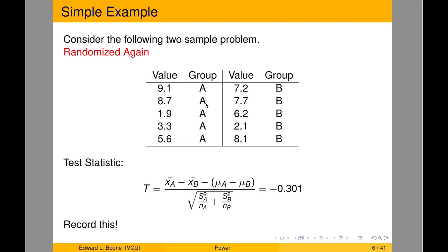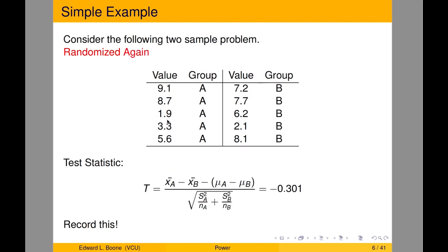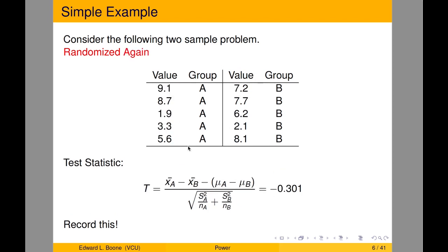If we do this again, the numbers change — for example, 1.9 is now in group A, but it wasn't in the previous randomization. We calculate the test statistic again and get negative 0.301. We record this value and do this again and again. Of course, we'll have the computer do this — there's no point doing each one manually, especially if you have to do it a thousand times.